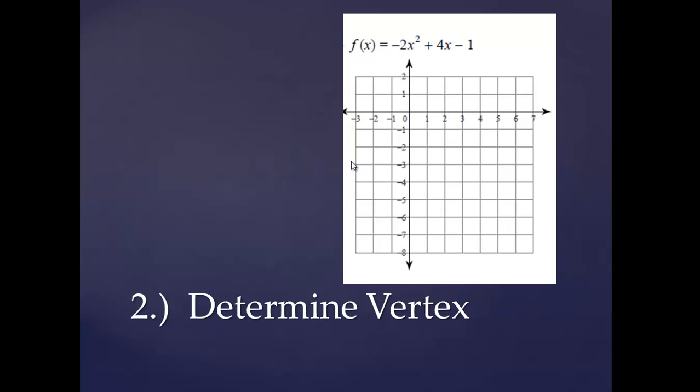Now, just because I know concavity, that doesn't mean I can really do anything just yet. So now I need to find the vertex. Vertex is a set of coordinates. So I need to find the x and the y. To find the x, I need to know the axis of symmetry. And that's just very simply calculated, negative b over 2a.